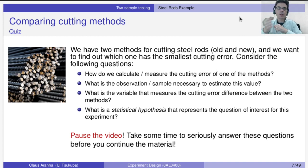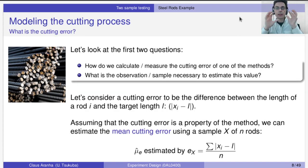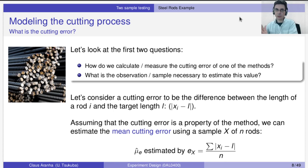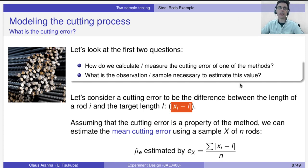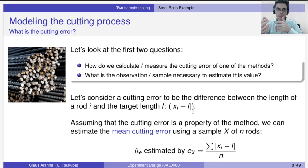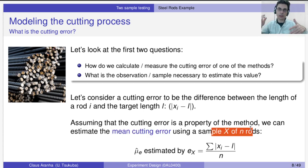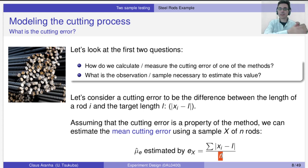Let's answer the first two questions: how do we calculate the cutting error and what observations and samples are needed? We can think of the cutting error as the difference between the target length and the real length. If the target is 50 meters and the real length is 50 meters and 10 centimeters, that difference is the cutting error — we'll call it x_i minus l. If we assume the cutting error depends only on the cutting method, we can estimate the mean cutting error using a sample of rods: the sum of rod lengths minus target length, divided by the number of rods.